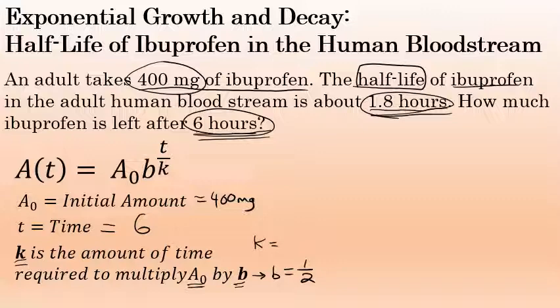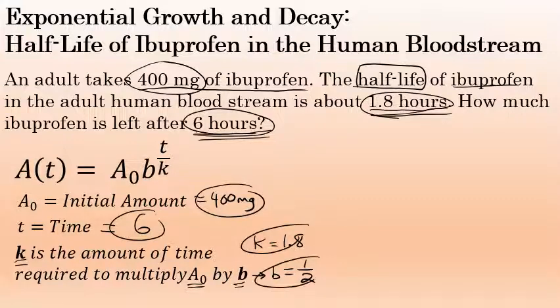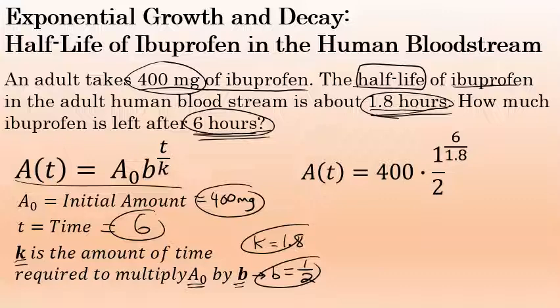For the drug ibuprofen specifically, the amount of time required to cut the amount in the bloodstream in half is 1.8 hours. So b is one half and k is 1.8. Substituting these values for a sub zero, t, k, and b into our half-life formula, we find the expression 400 × (1/2)^(6/1.8).